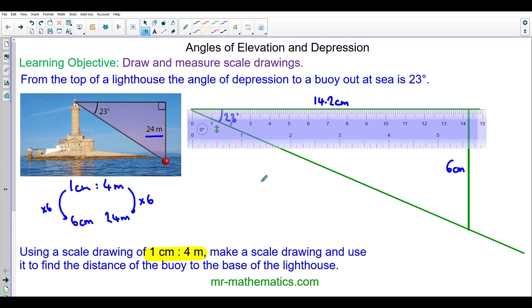Using our scale of 1 centimeter in the drawing to 4 meters in real life, we can convert 14.2 centimeters by multiplying. We do the same to the other side: 4 multiplied by 14.2.